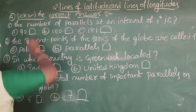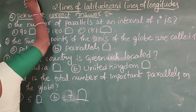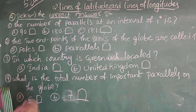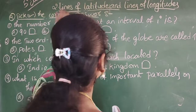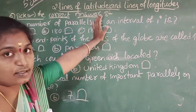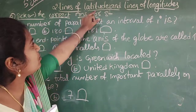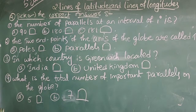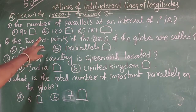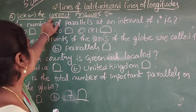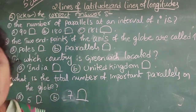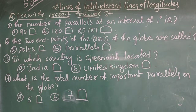Good morning, children of 5th class. Subject is Social. Today I am going to explain the 2nd lesson bits. The 2nd lesson name is Lines of Latitude and Lines of Longitude. In the previous class and previous videos I explained this lesson. Today I am going to explain the first part of this lesson, which is called Tick the Correct Answers.